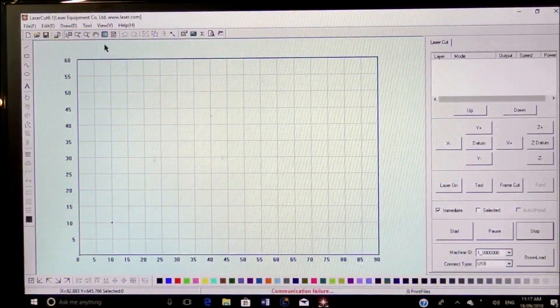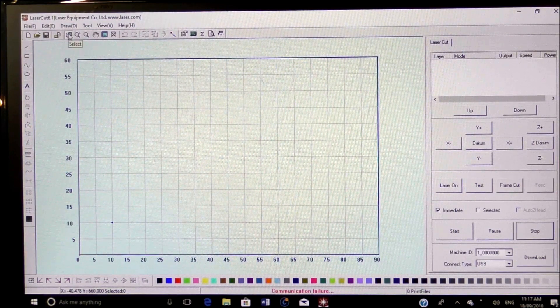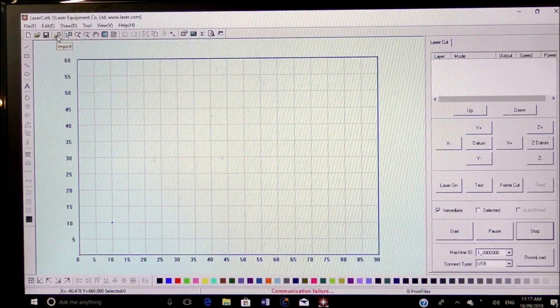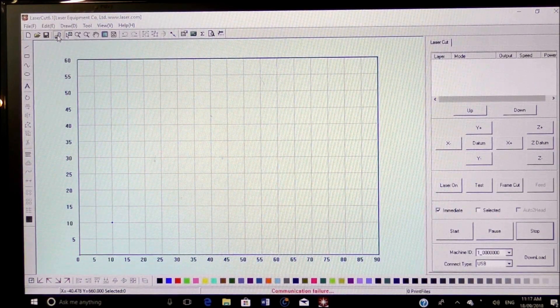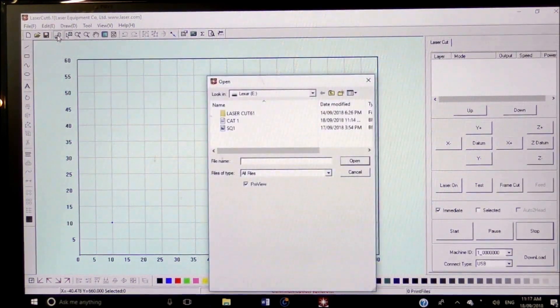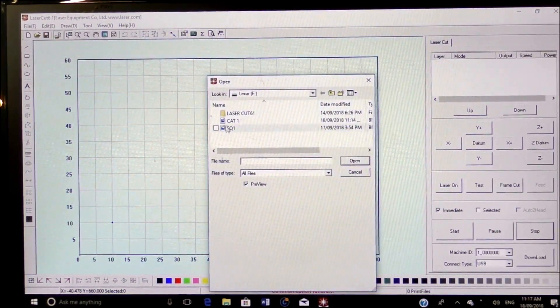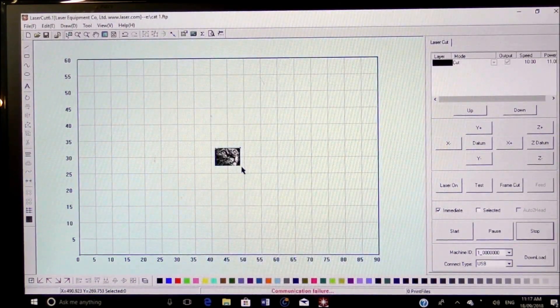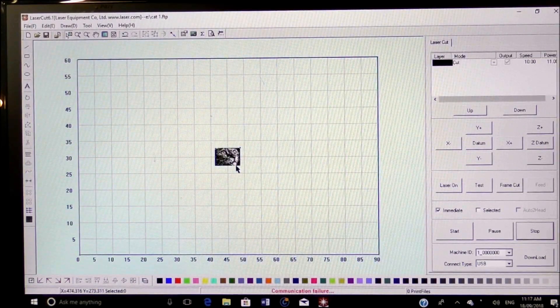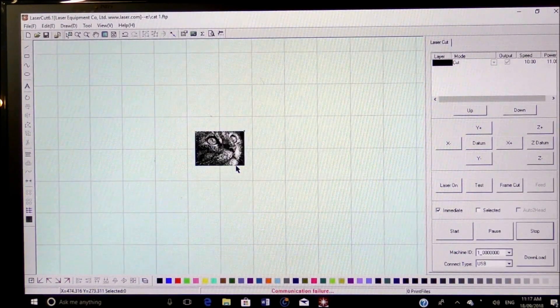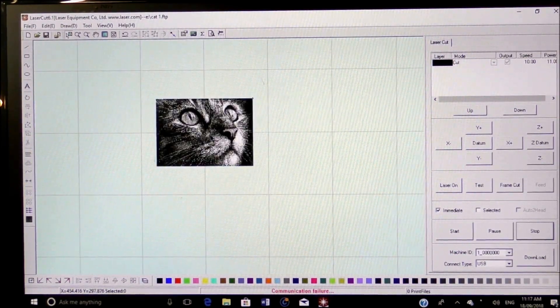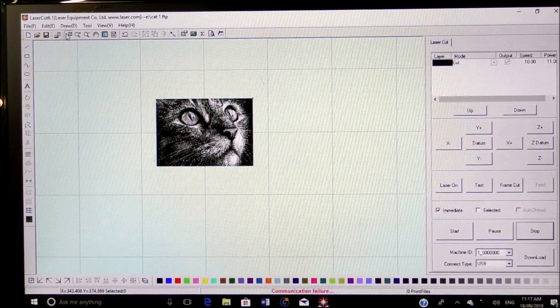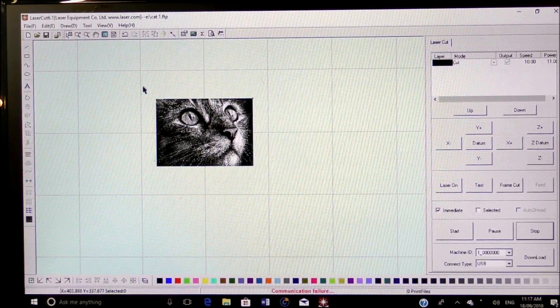Okay, so we've got LaserCut here now. We go to here to import a file, and here it is, cat1. Double click and there it is. So what we're going to do now is come here to the select tool.